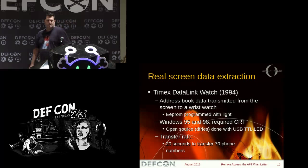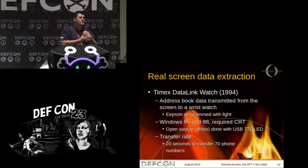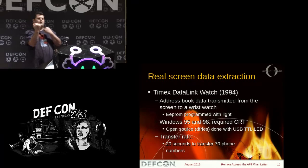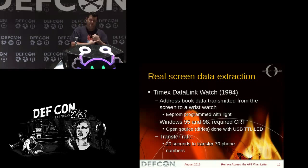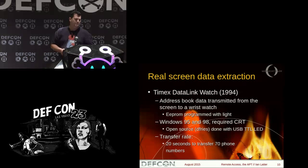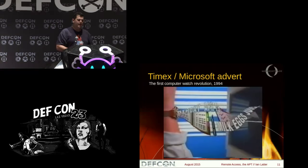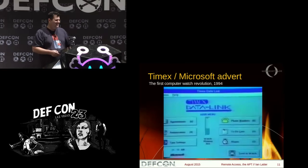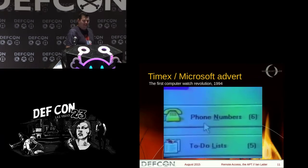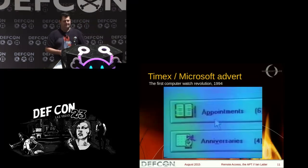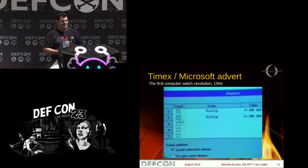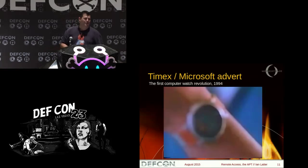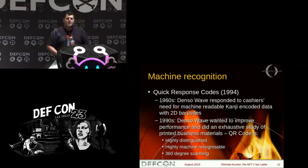The first real screen data extraction is the Timex Data Link watch, a Microsoft project back in 1994. Some of you may have even owned one. There was an EEPROM inside the watch where actual lines printed on the CRT sent signals through the face. It had to work on a CRT — open source projects have had to use an LED because it didn't work through an LCD display. It took 20 seconds to transfer 70 phone numbers — data went out through the CRT into the face of the watch.